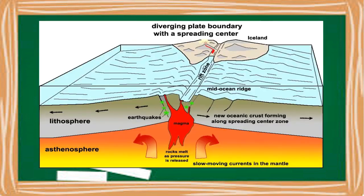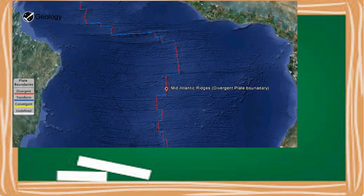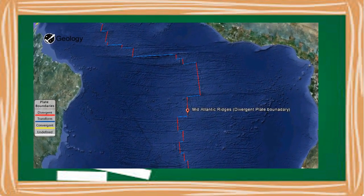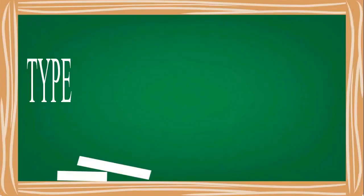The spreading rate of these ridges may vary from 2 to 20 centimeters per year. Although a very slow process, divergence of plates ensures a continuous supply of new materials from the mantle. The Mid-Atlantic Ridge is an example of a spreading center which causes the divergence of the South American plate and the African plate.